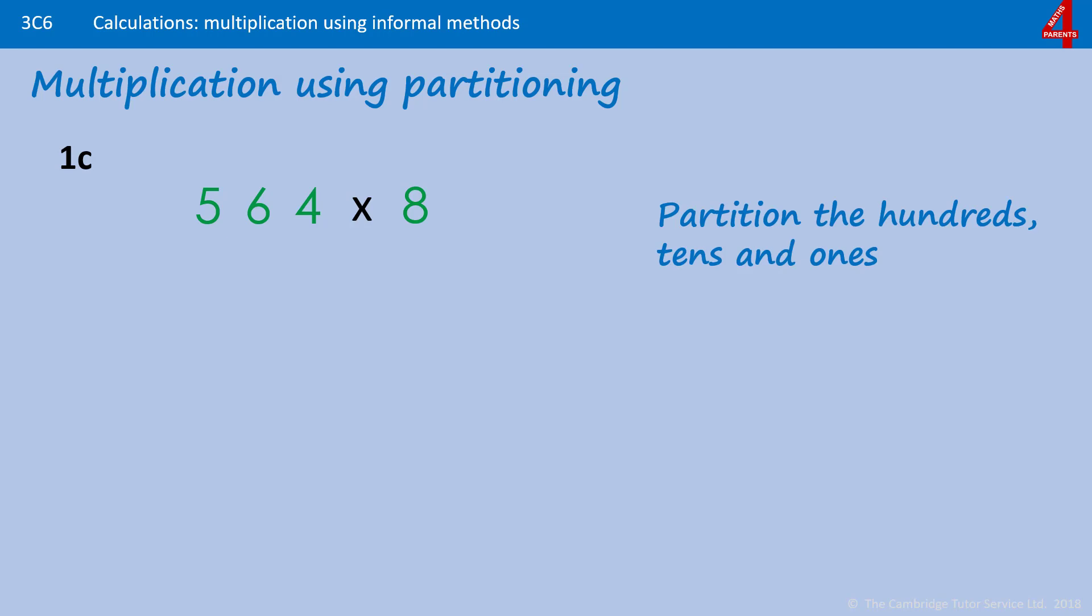Partition the hundreds, tens and ones. Starting with the hundreds, 500 times by 8. If you remember that 5 times 8 is 40, then 50 times 8 is 400, so 500 times 8 will be 4,000. Now moving on to the tens, 60 times by 8. If you remember that 6 times 8 is 48, 60 times 8 must be 480. And finally the ones, 4 times 8, that's 32. Add those together. 564 times by 8 is 4,512.